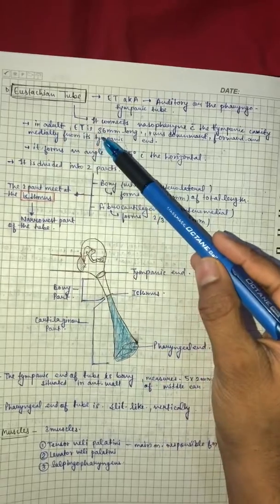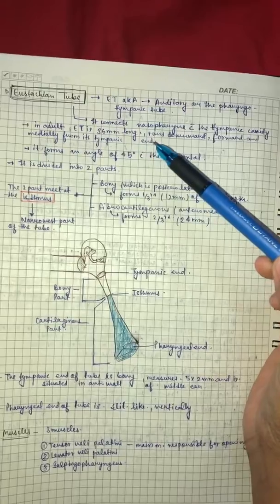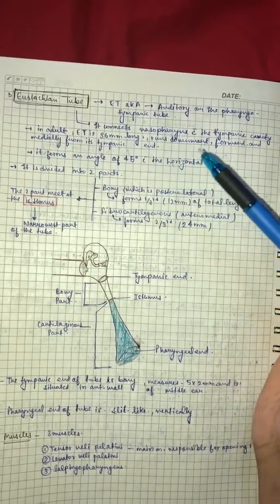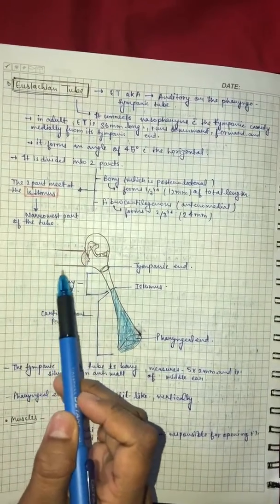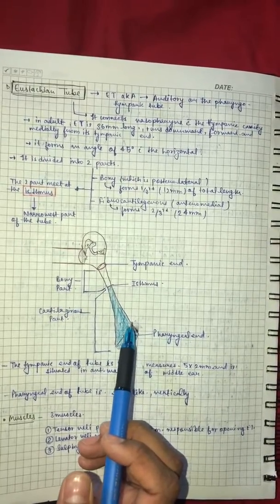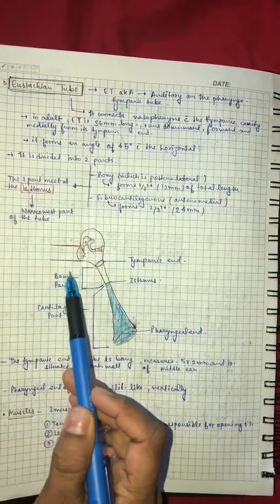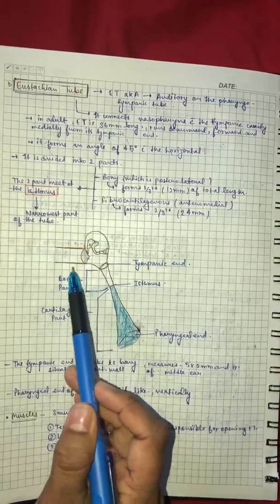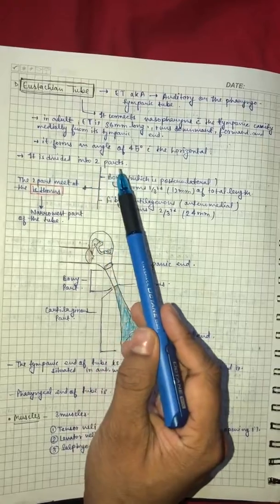In adults, Eustachian tube is 36mm long. It runs downward, forward and medially from its tympanic end. It forms an angle of 45 degrees with the horizontal. This is the external acoustic canal, this is the tympanic membrane, and this is Eustachian tube. Horizontally, external acoustic canal through Eustachian tube, this angle is 45 degrees.